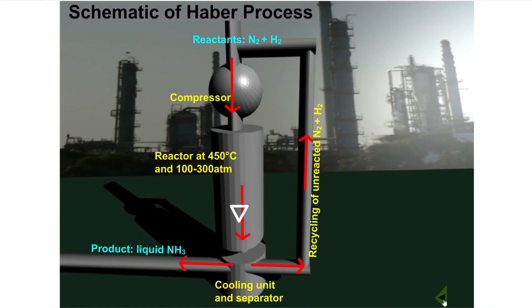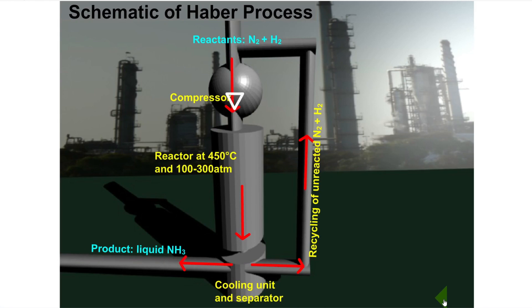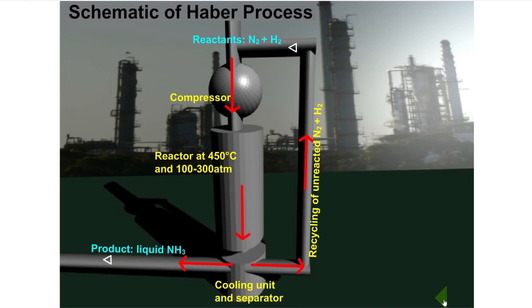This is a schematic diagram of the Haber process. The reactants, N2 and H2, together with unreacted nitrogen and hydrogen which is recycled back into the process, are fed into the top of the reaction vessel. The ammonia gas that is formed is cooled until it liquefies, and the liquid ammonia is then led off.